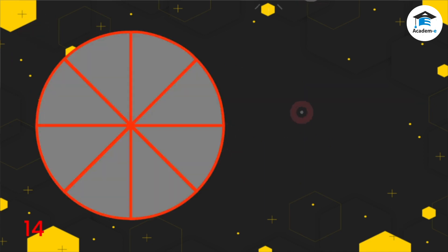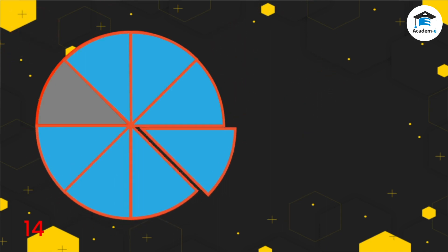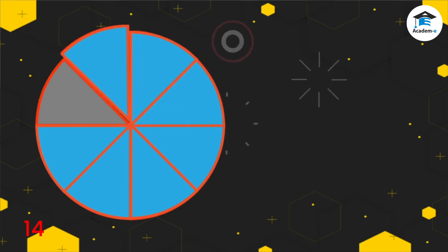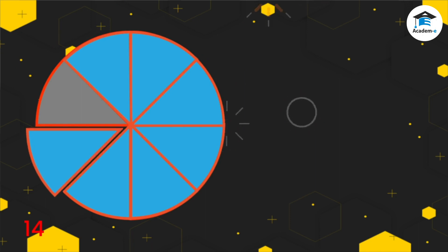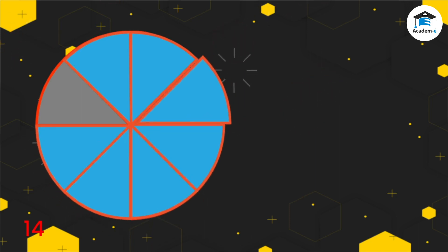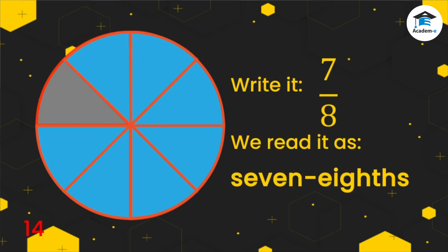Let's have another example. Look at the figure below. It's divided into 8 equal parts. We are going to color 7 eighths of the circle. In this figure, we colored 7 out of 8. How many parts are being shaded? 1, 2, 3, 4, 5, 6, 7. There are 7 parts that are shaded. How many equal parts are there? 1, 2, 3, 4, 5, 6, 7, 8. There are 8 equal parts. We write it like this, and we read it as 7 eighths.